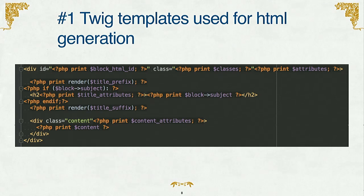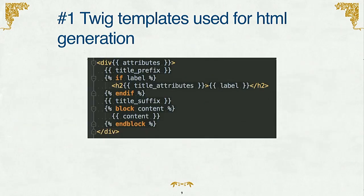Here's a comparison — this is a Drupal 7 block template. You'd have to dig in and try to parse through the print statements, PHP open and close tags, to see what markup is going to be generated. The templates were not really user friendly. But this is a Twig template for the same thing in Drupal 8, and you can see it's a lot easier to read — you've got if statements for basic branching logic, and you can see where the h2 and div tags are being rendered much more easily.